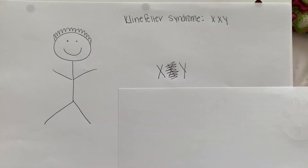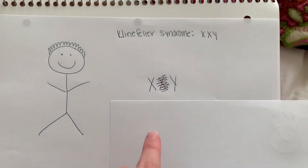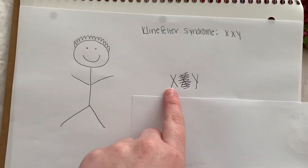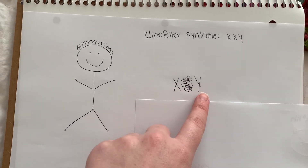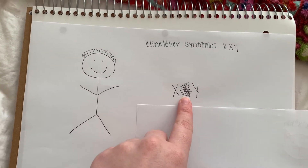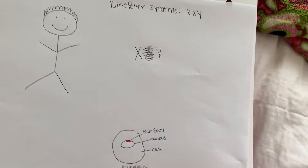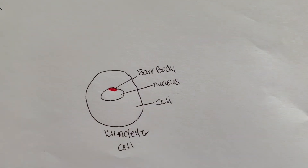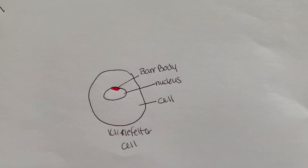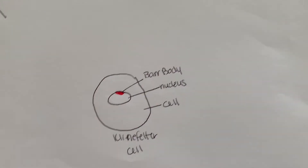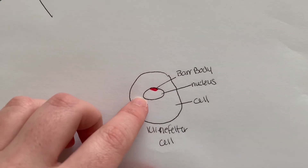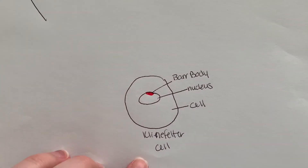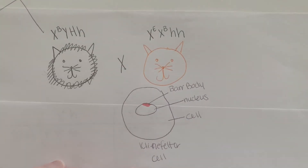Here is an example: you have an XXY and one X will be canceled out through X inactivation, creating a Klinefelter cell that will look just like a typical female cell with one Barr body.